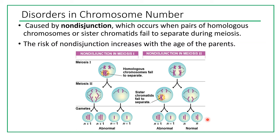Let's imagine those are all sperms. Which one will fertilize an egg? It may be a normal sperm, so nothing would happen. Or the abnormal ones might become polar bodies. But the chances are that an abnormal sperm or abnormal egg will be fertilized, and there is a chance the embryo will survive — then the person will have a genetic disorder.